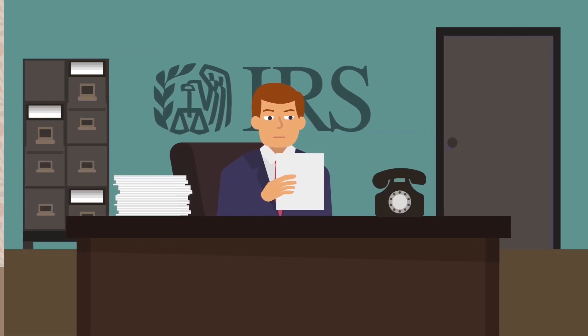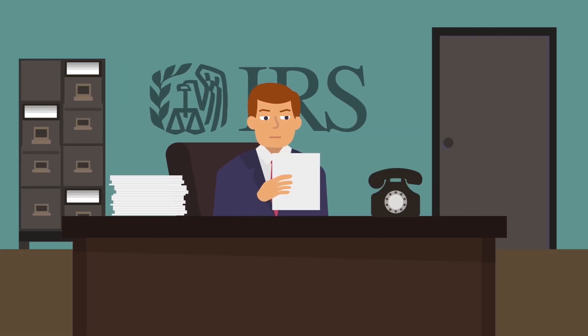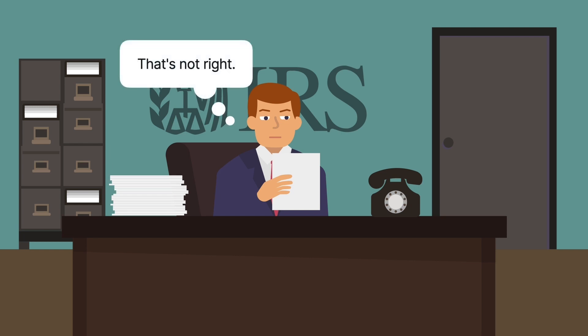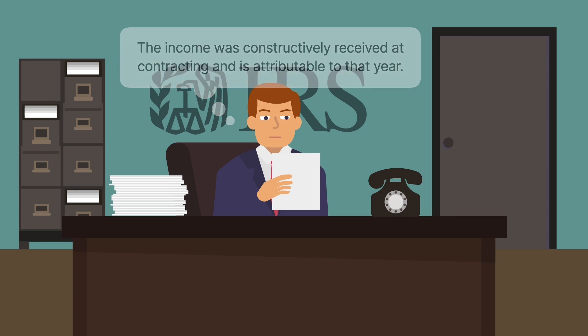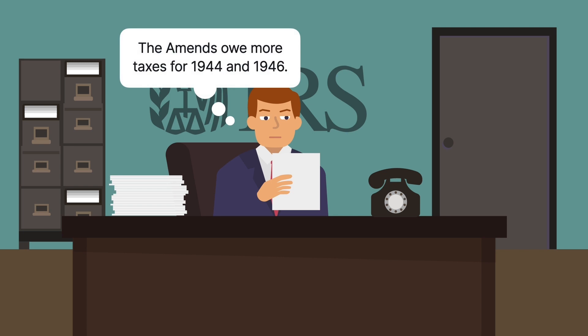When the couple's returns for 1944, 1945, and 1946 were audited, the Commissioner of Internal Revenue objected. He believed that Amund constructively received the income from each annual sale in the year in which the contract was made, and the income was therefore attributable to that tax year. The Commissioner assessed deficiencies in the Amunds' income taxes for 1944 and 1946.